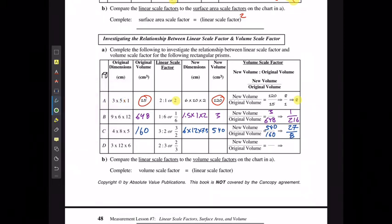And last but not least, if I have 3 by 12 by 6, I'm gonna have 216. And 2 by 8 by 4 is gonna give me 64. 64 over 216 is going to reduce down to 8 over 27.